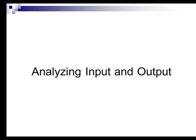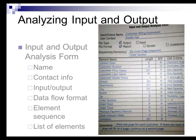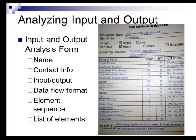The first important step in creating the data dictionary is analyzing input and output. For this, there is another form used called an input and output analysis form. These forms contain information such as a descriptive name, user contact information, input or output data, data flow format, sequence elements of the data, and a list of elements which takes up the majority of the form space.